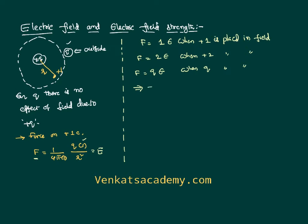Basing on this, I can write electric field intensity E as F by Q. It is the definition of the electric field intensity or field strength as the force experienced by a unit positive charge when it is placed in a field.